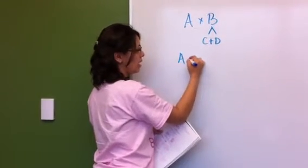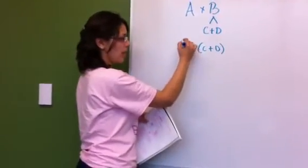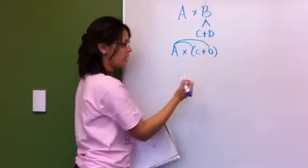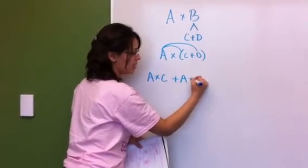That would then be A times C plus D. You would then distribute A into C and A into D, and that would leave you with A times C plus A times D.